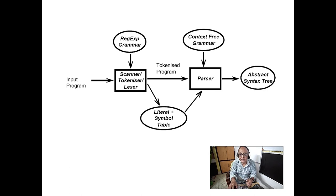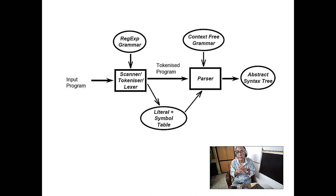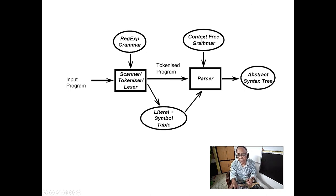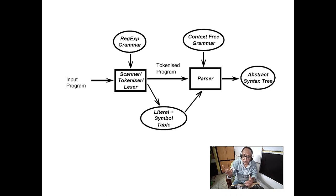However, it must be deterministic context-free grammar. There are two types: deterministic and non-deterministic context-free grammar. It should be deterministic, because non-deterministic context-free grammar requires a non-deterministic pushdown automaton, which is very, very difficult to implement.